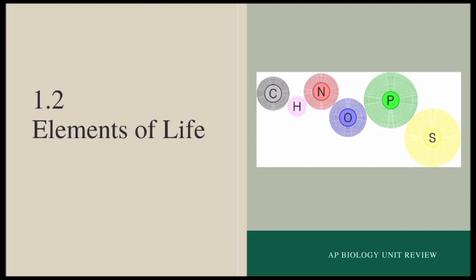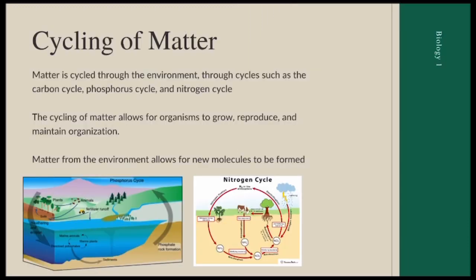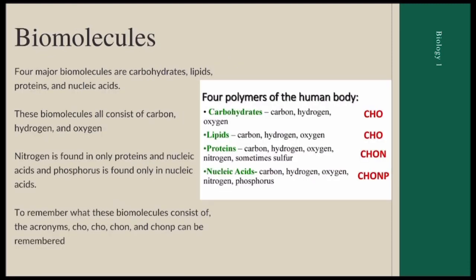This is section 1.2, Elements of Life. For cycling of matter, you don't need to know each specific cycle — you just need to know that these cycles allow for organization within environments and allow organisms to thrive, and that new molecules are formed through these cycles. Next, we're going to be talking about the four major biomolecules: carbohydrates, lipids, proteins, and nucleic acids.